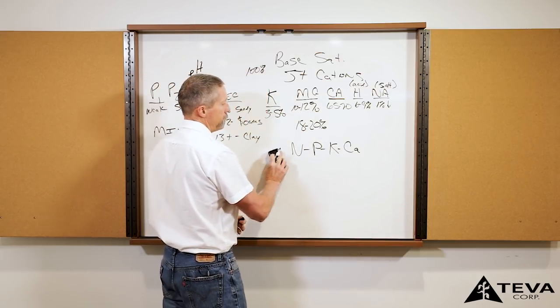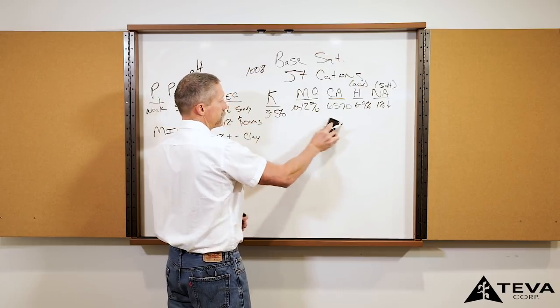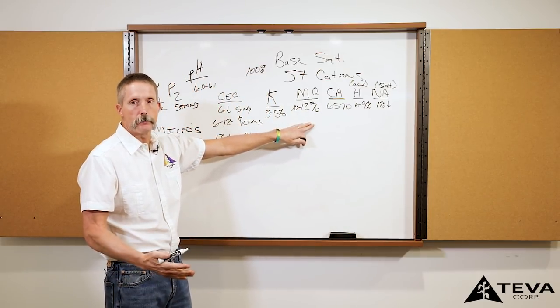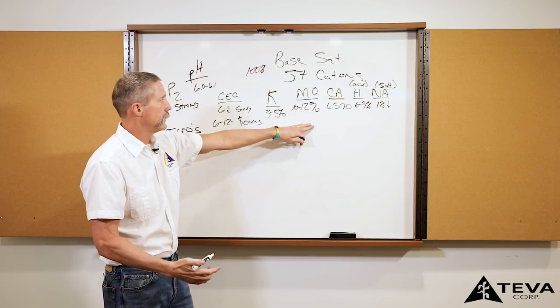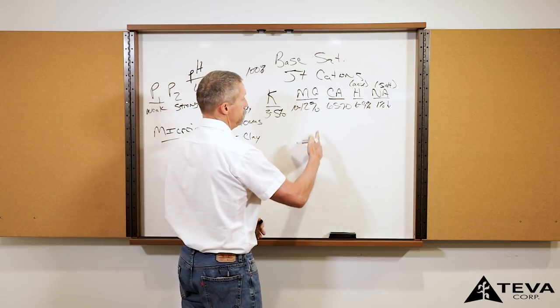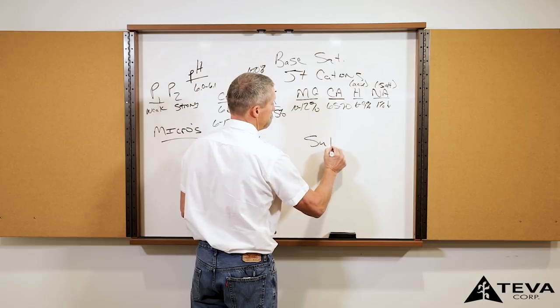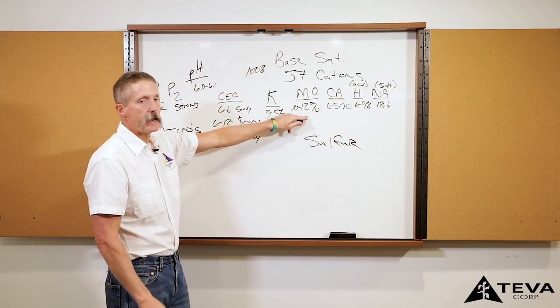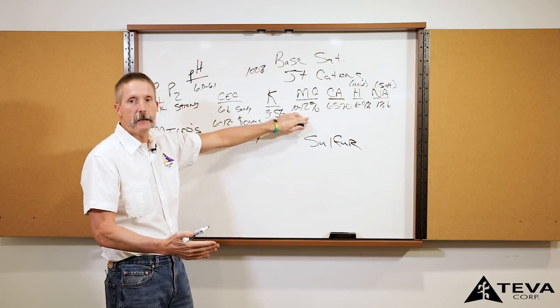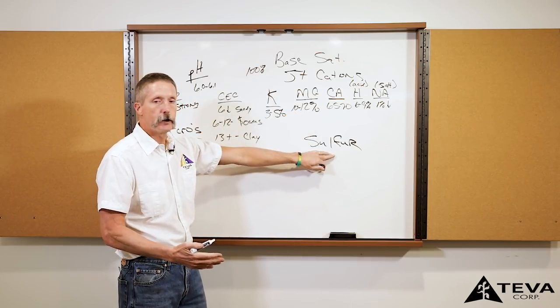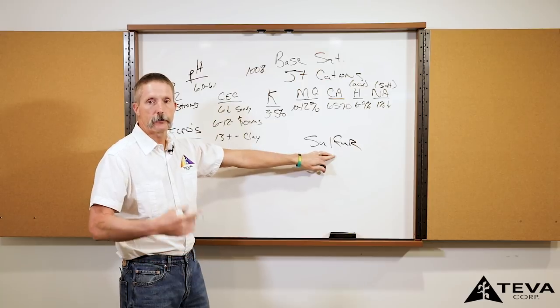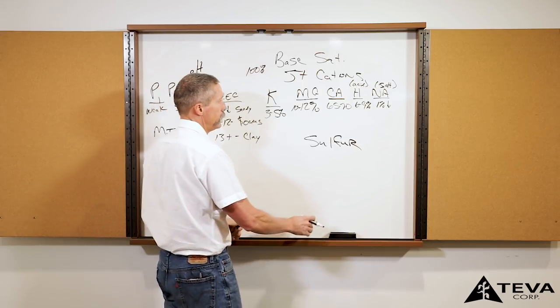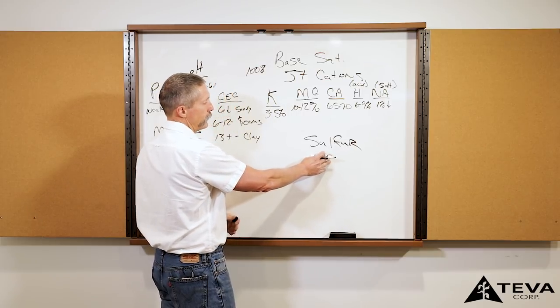So what do you do if your magnesium is high? What's the solution to doing these kinds of things to fix problems in the soil? One thing that we look at using is sulfur. Sulfur is going to be a real key thing for you to use if you've got high magnesium or high iron, high aluminum, any metals. Then sulfur is going to help you get that out of your soil and get it to where you'll be able to be more efficient out of your fertilizers.